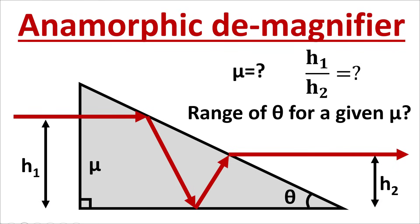Hello dear students. Let's see this very interesting question of geometrical optics. In this question there is a right-angle prism. A ray is incident parallel to the base at height h1. It suffers a first TIR, goes like that, suffers another TIR, reaches here, and comes outside. The emergent ray is parallel to the incident ray but the height of the emergent ray with respect to the base is reduced.